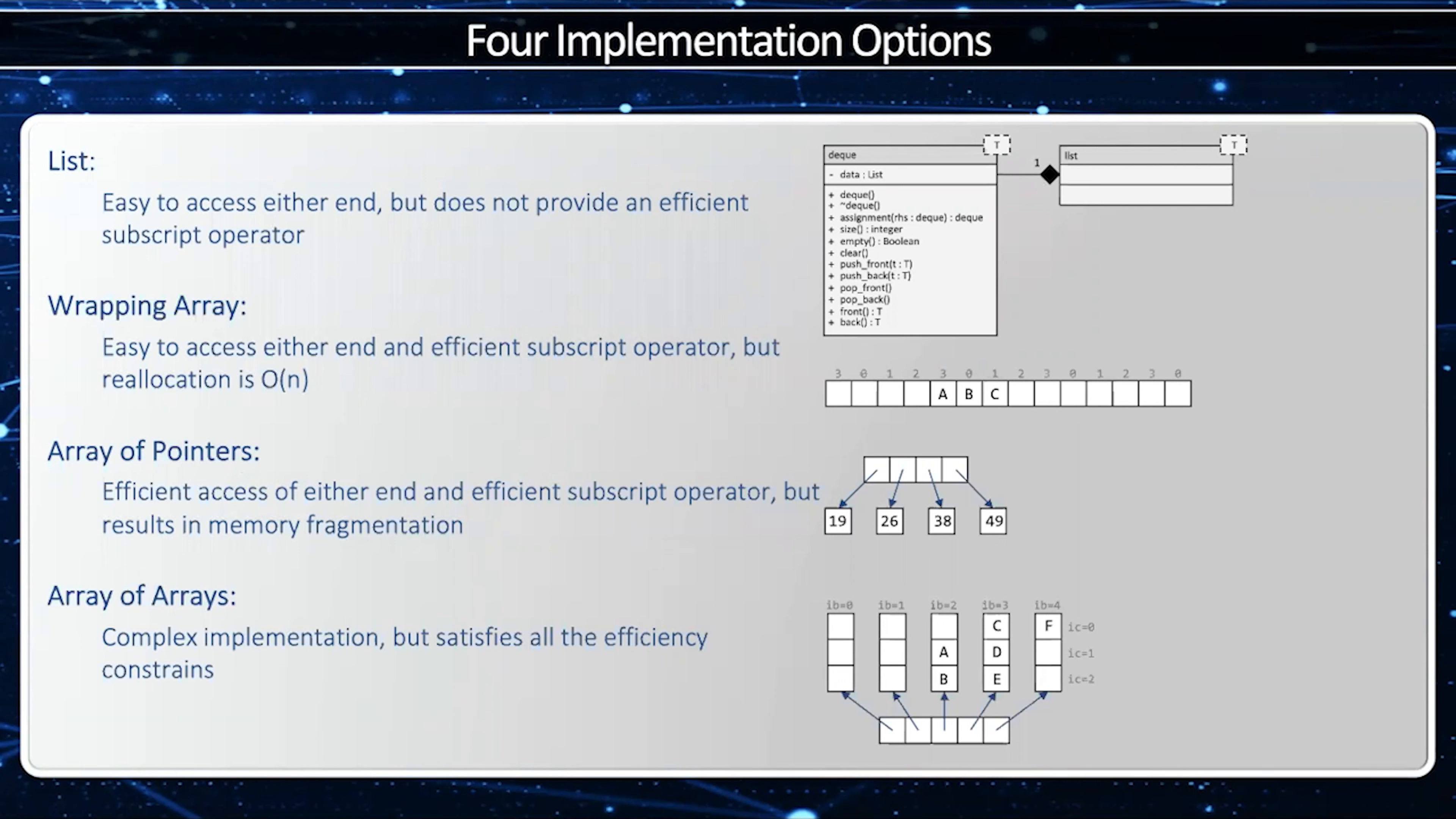We have the wrapping array implementation, the array of pointers implementation, and finally the one that standard template library uses, which is the array of arrays. This has an array of pointers to blocks, and each block will have a collection of elements. In order to move from one block to the other, the iterator has to know details about that implementation: how big a block is and where the next block is in memory.